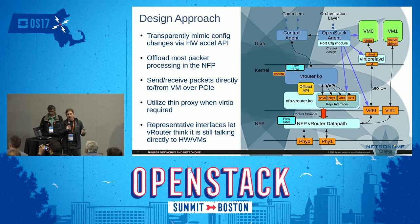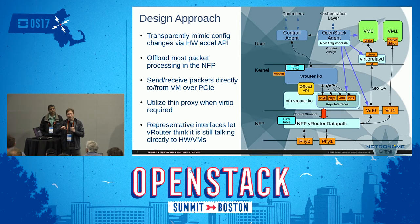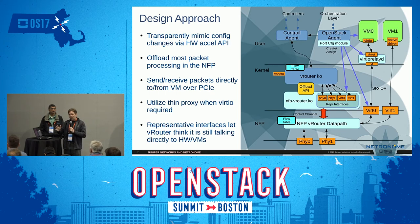The last big piece of this puzzle is that we wanted Contrail to not really need to know whether or not the special hardware was there. So we created what we call representative interfaces — net devs in the Linux kernel that make the VRouter data plane think it is still talking directly to interfaces in the virtual machines and physical hardware. But in fact those representative interfaces are proxies for sending the traffic via the NFP.